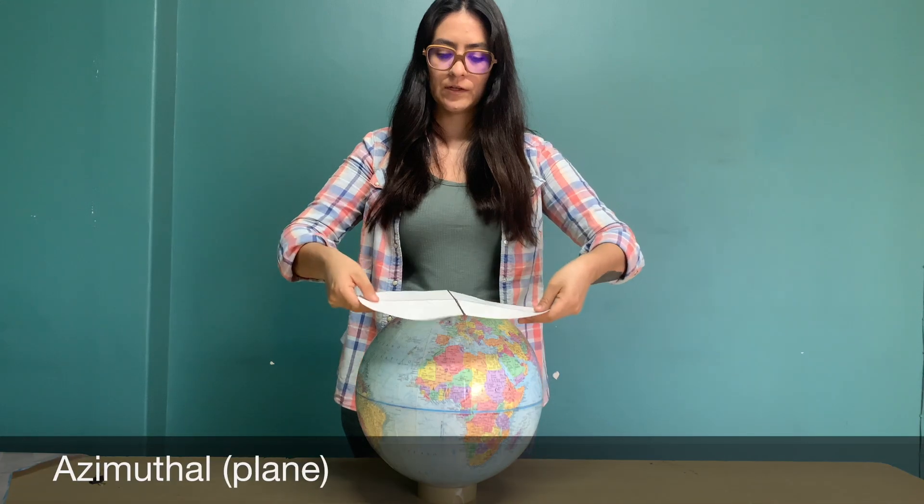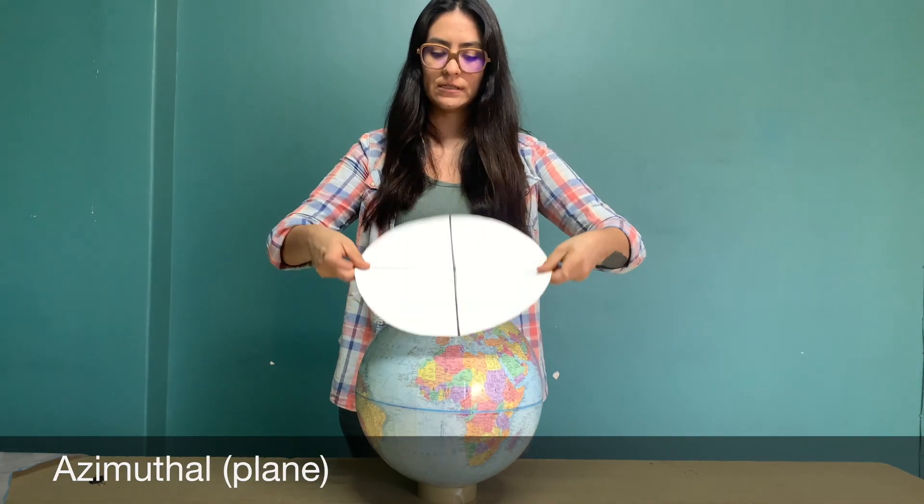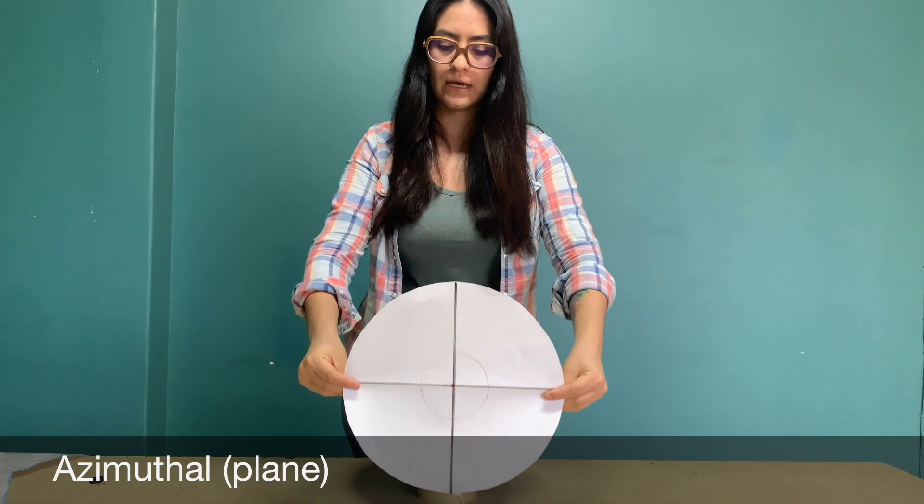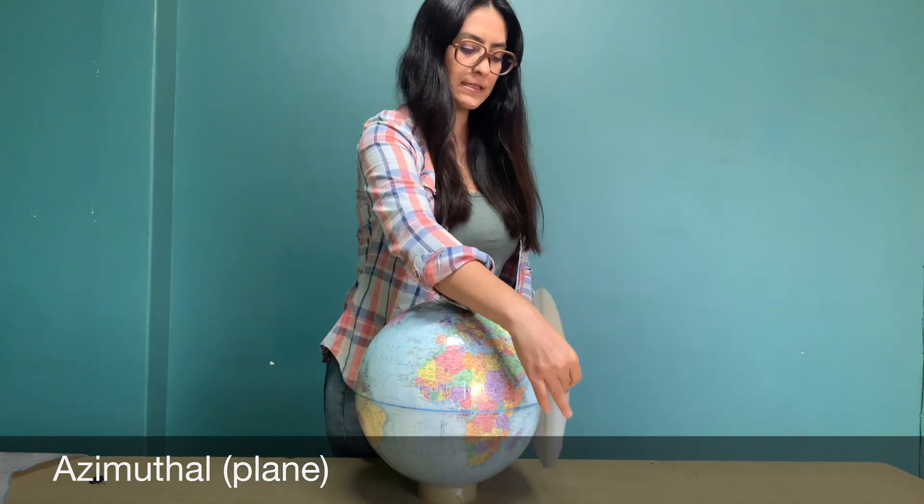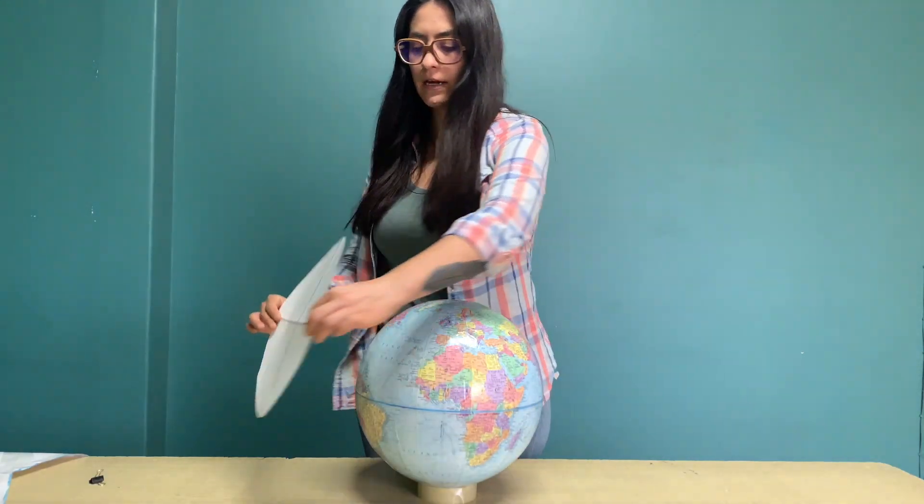This type of projection is usually tangent to the globe at one point. The point of contact may be the north pole, the south pole, a point on the equator, or any point in between.